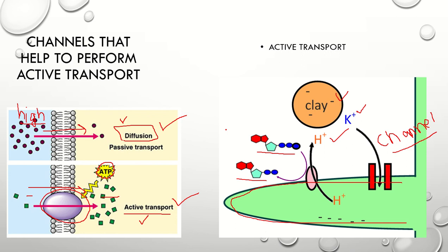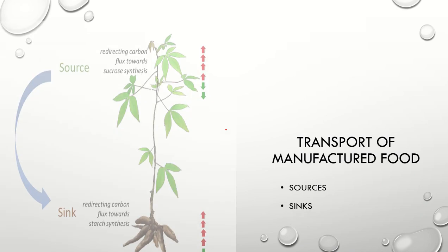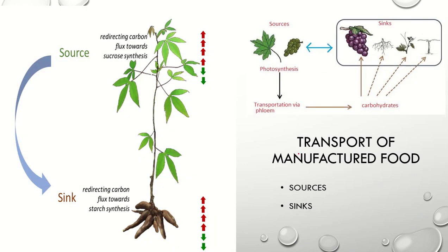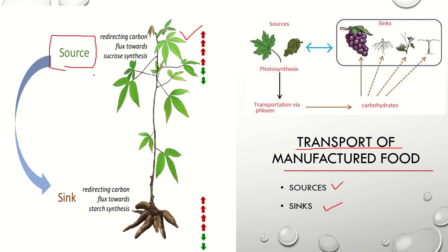Ions move with active transport and water moves with osmosis. Now the main topic of today's lecture is the transport of manufactured food. We need to understand two things: what are the sources and what are the sinks. In the first diagram you can see that leaves are the special structures of the plant involved in photosynthesis, meaning they are the source of sugar molecules. With the help of light energy and chlorophyll, leaves capture light and act as a source by performing photosynthesis.